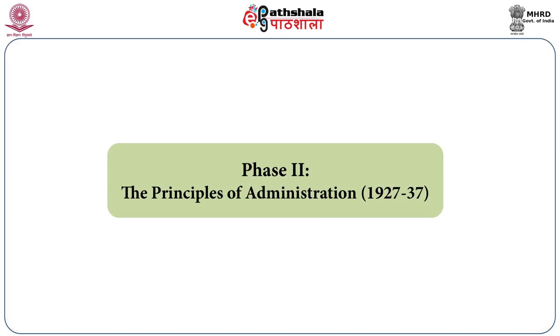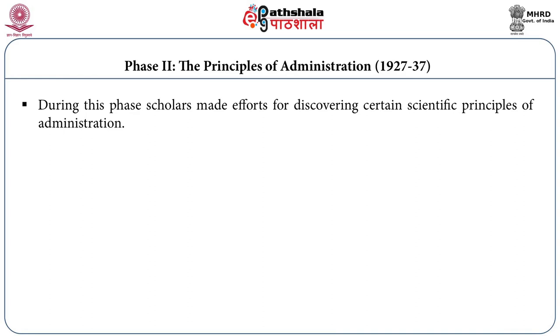Despite criticism against this dichotomy, this period witnessed the discovery of certain principles of administration, which paved the way for the second phase dealing with the principles of administration. In the second phase, we see how public administration has been discussed in terms of principles. This phase is called the principles of administration phase, covering the period 1927 to 1937.